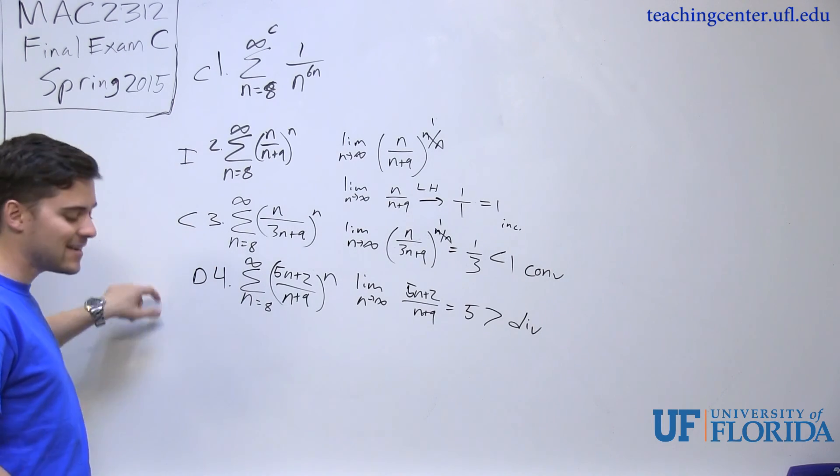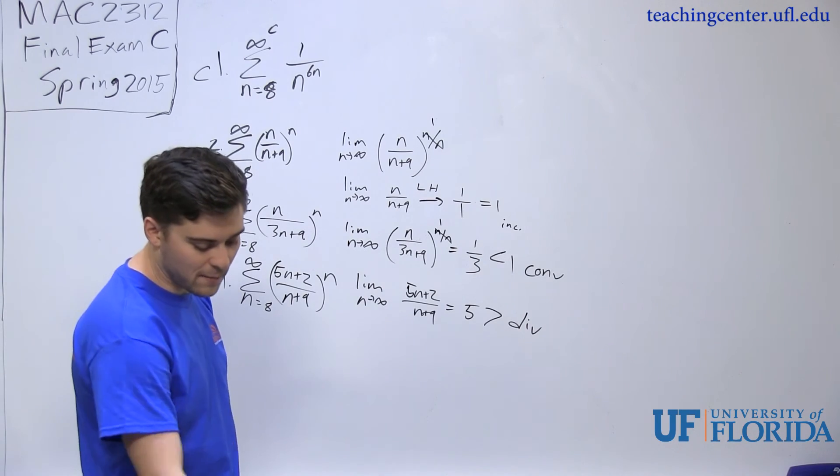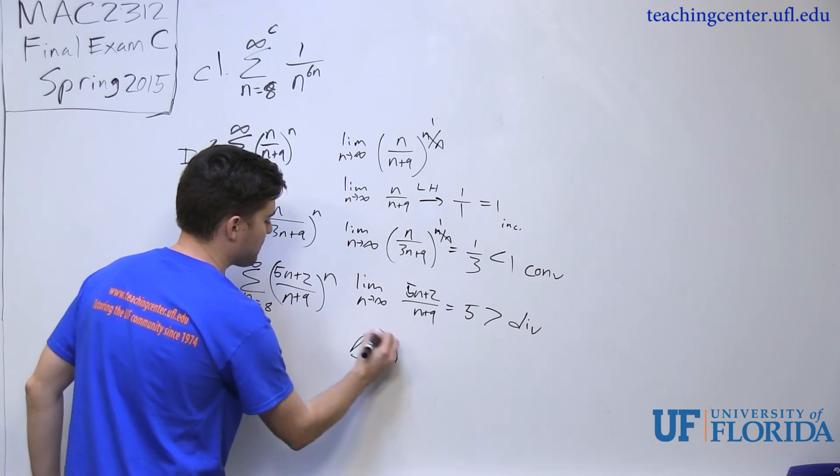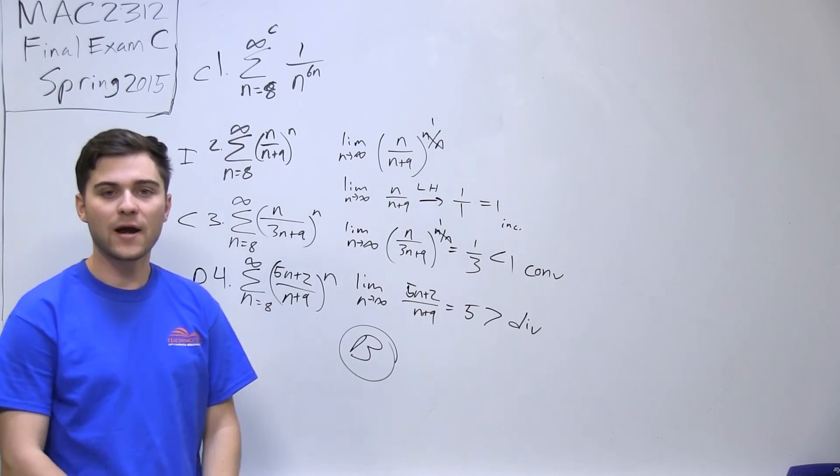So I got CICD: convergent, inconclusive, convergent, divergent. So if I look at my answers, I can see that letter B is the right answer.